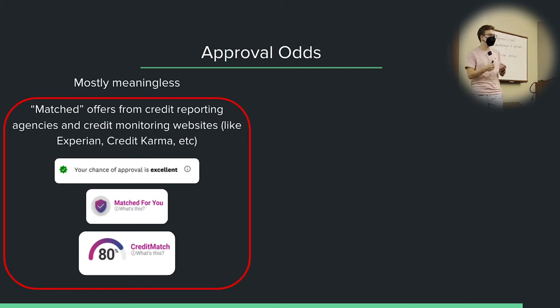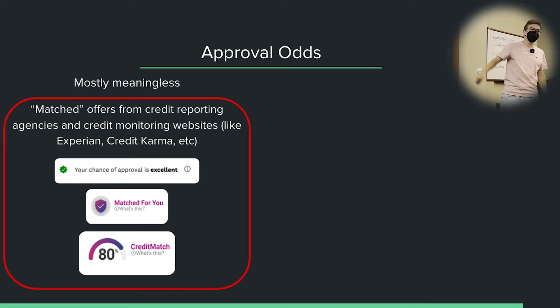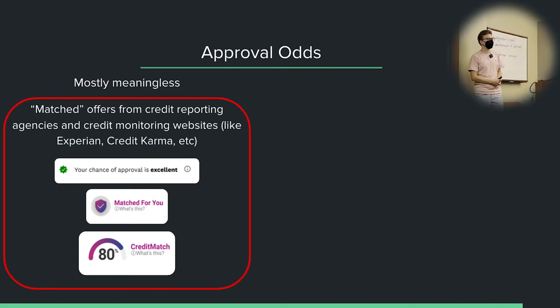When I first got started into this game and I didn't have a good understanding of the card issuer rules, I had a matched offer for the Chase Sapphire Preferred with only about seven months of credit history. We haven't talked about the rules for Chase yet, but there was no way I was getting that card. It said it was matched for me, I thought I had a good chance, I applied for it, and Chase told me to kick rocks. I should not have followed those offers.